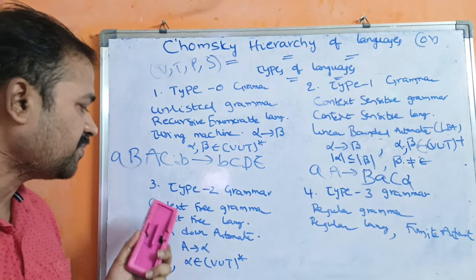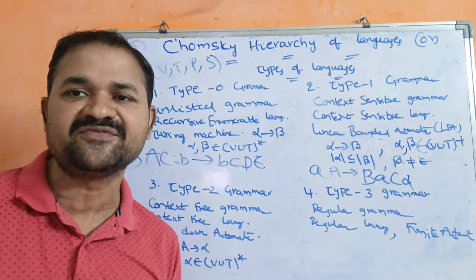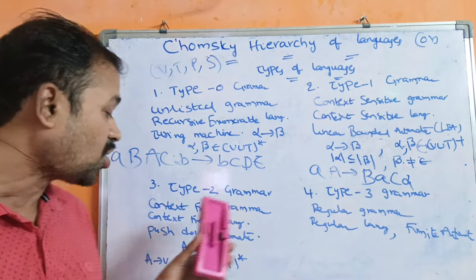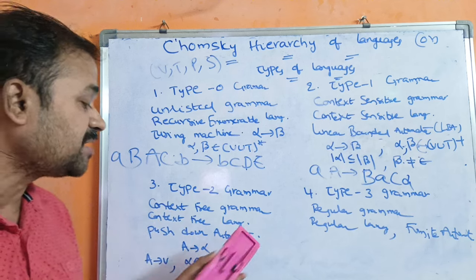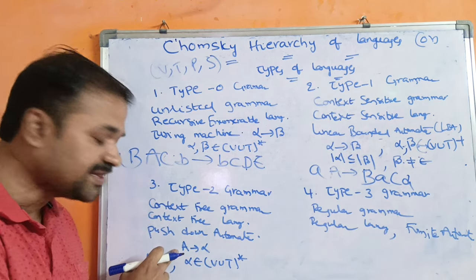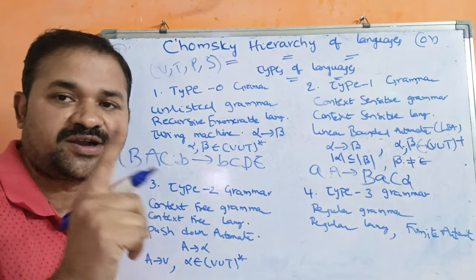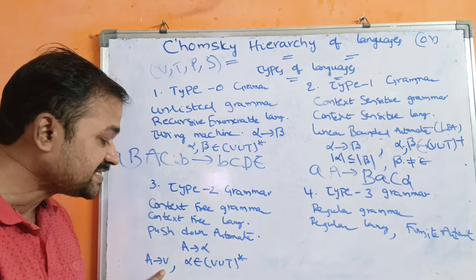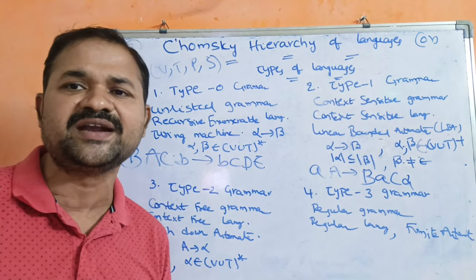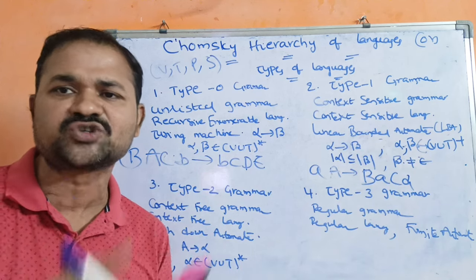Now let us see about type 2 grammar. Type 2 grammar can also be called as context free grammar, CFG. Context free grammar generates context free language. Context free languages are accepted by pushdown automata. Here the productions are represented in the form A implies alpha, where A is a single non-terminal, and alpha is any combination of non-terminals and terminals. We can use zero occurrences also, meaning epsilon can also be allowed.